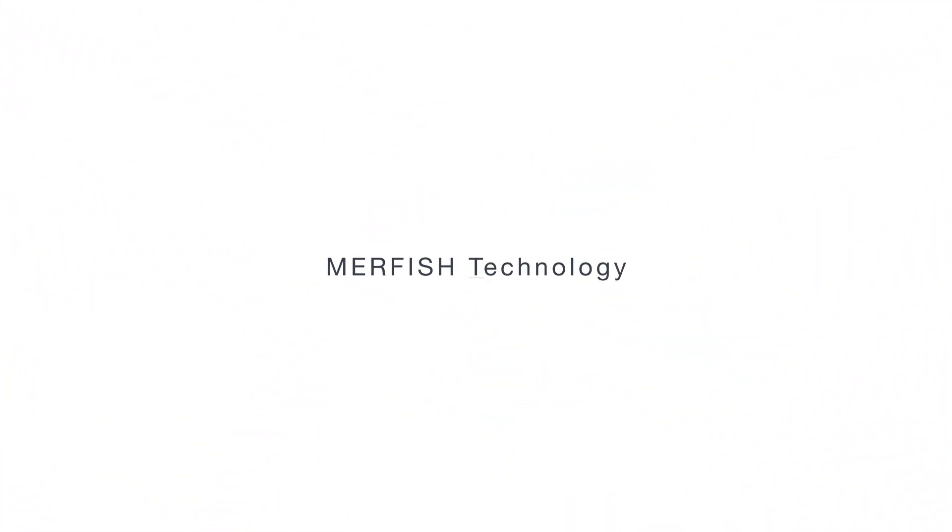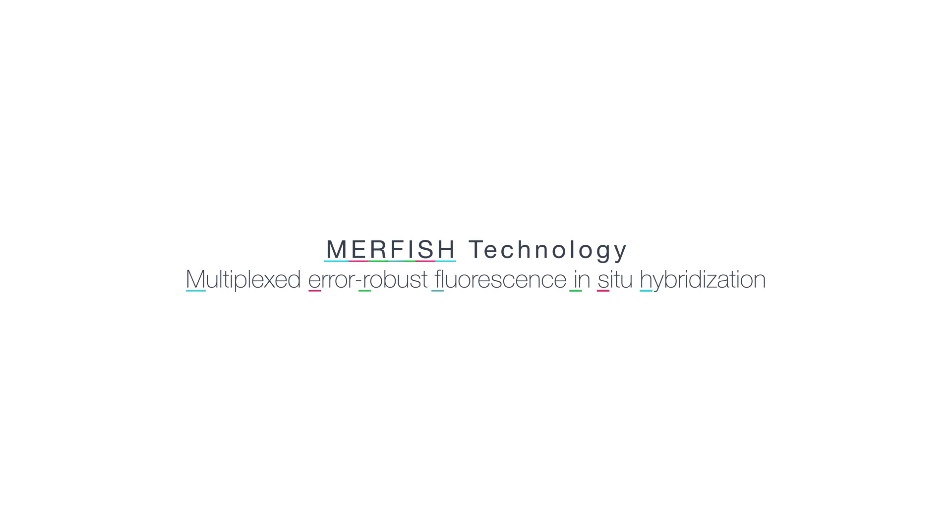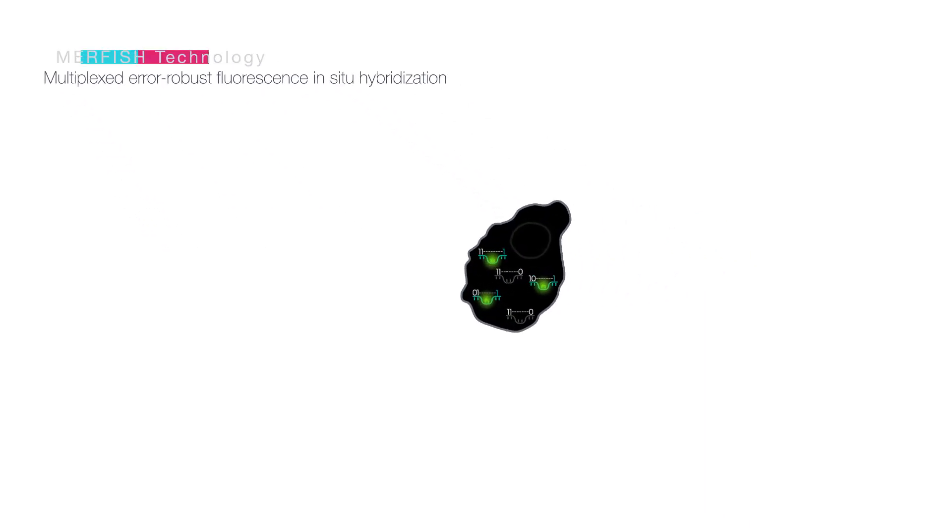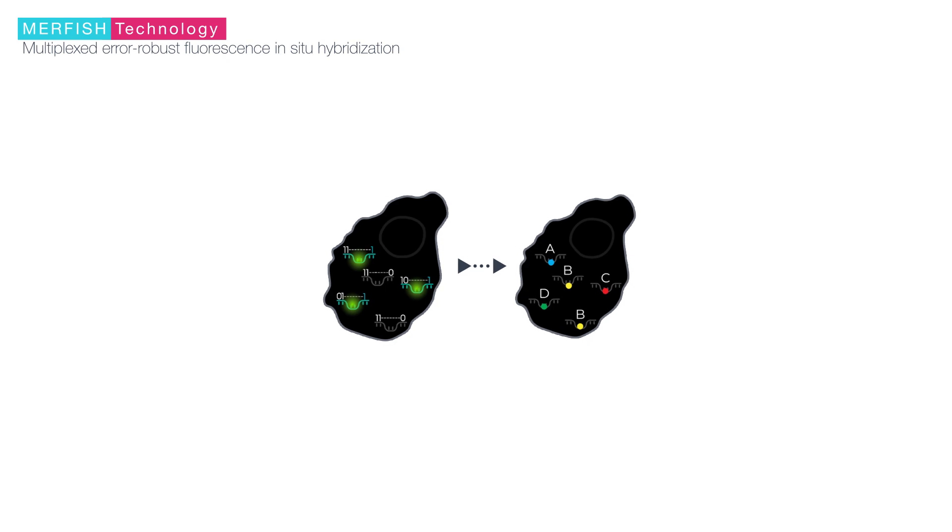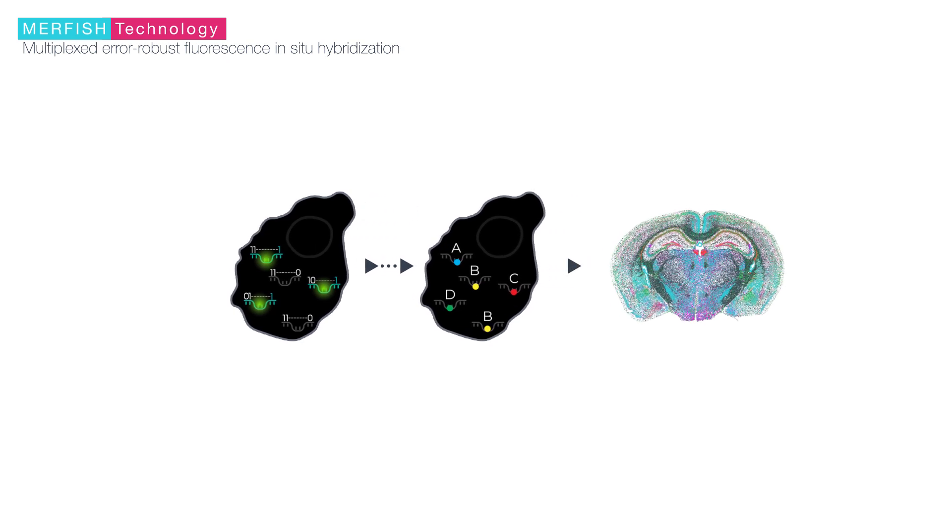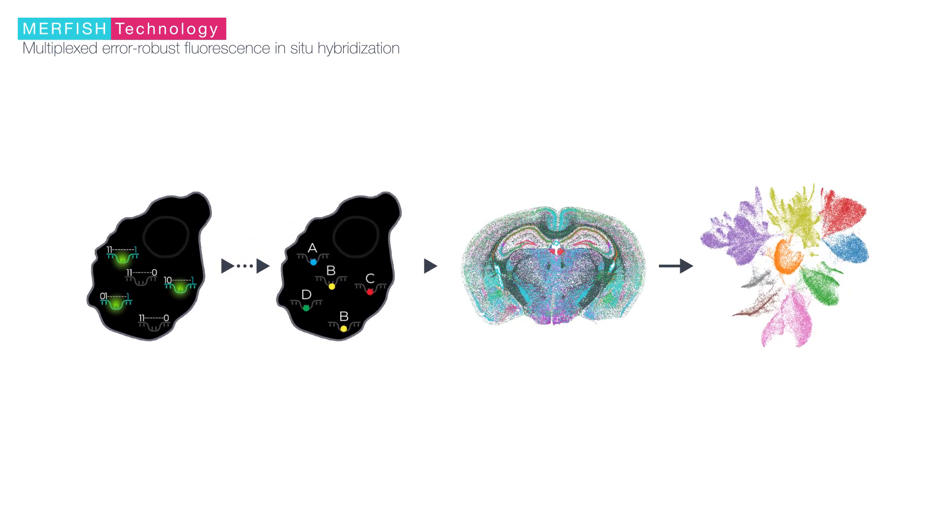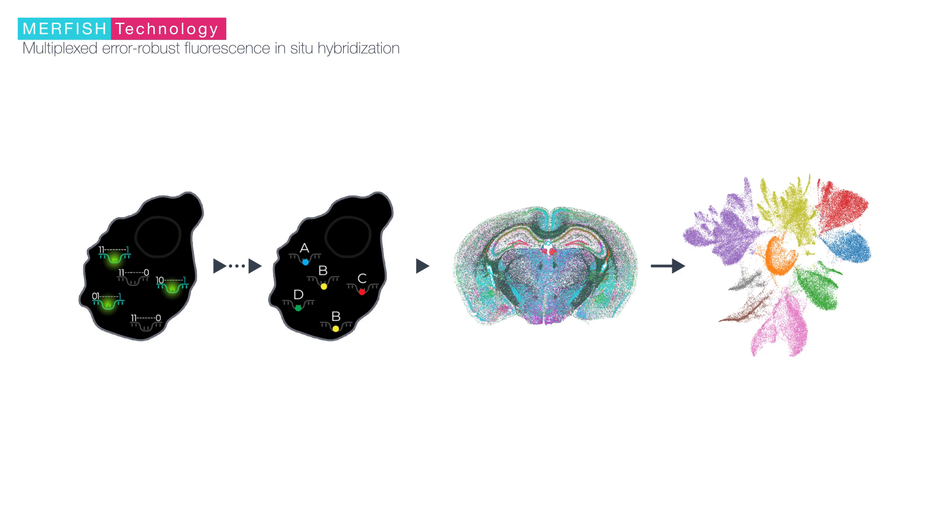MERFISH is a technology for spatially mapping gene expression and cellular composition with single molecule accuracy, capable of simultaneously measuring the copy number and spatial distribution of hundreds to tens of thousands of RNA species in individual cells.